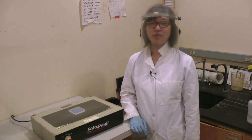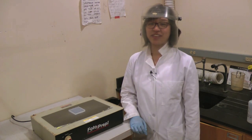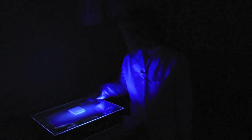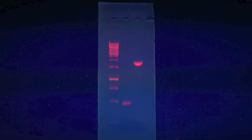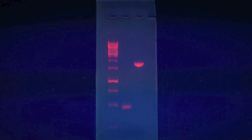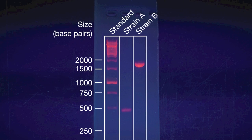To visualize DNA, we use a stain that glows under ultraviolet light. Hit the lights! These pink bands are DNA molecules. Each one represents a short segment of the plant's DNA. The position of the band in each lane indicates the size of the segment. As you can see, these two strains have different sizes.